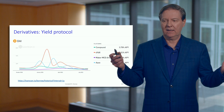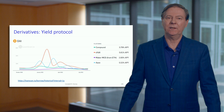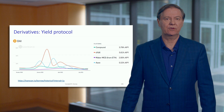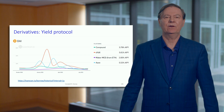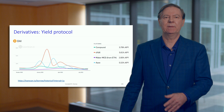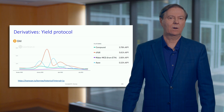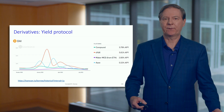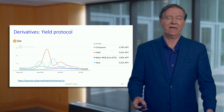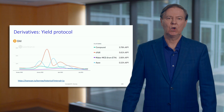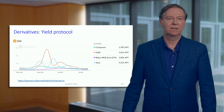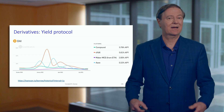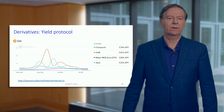In centralized finance, we know this pretty well. I could take out a fixed rate mortgage and know what the rate is and all of the payments to maturity. Or I could take out a variable rate mortgage, which might be cheaper today than a fixed rate mortgage, but who knows what's going to happen to the rate in the future? Think of this yield protocol as completing an important market.